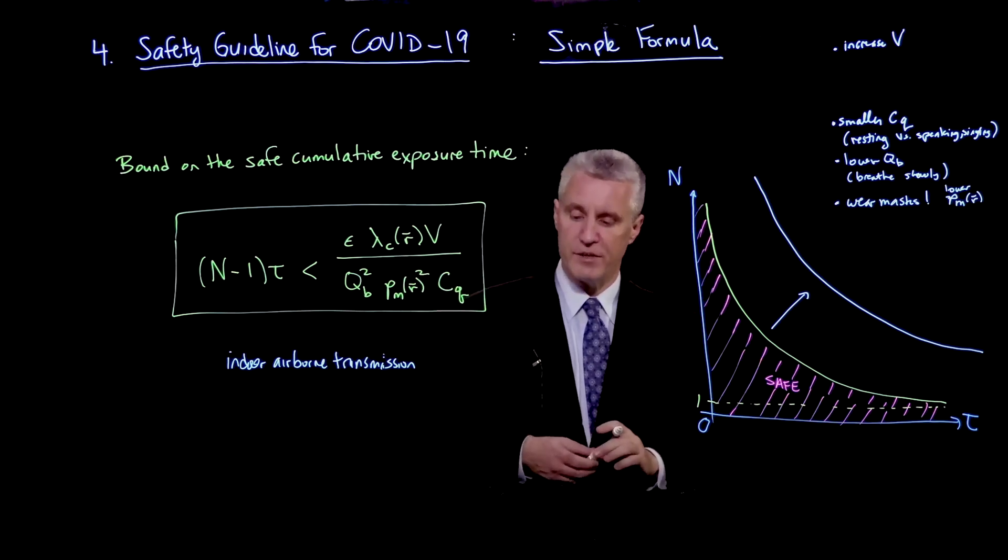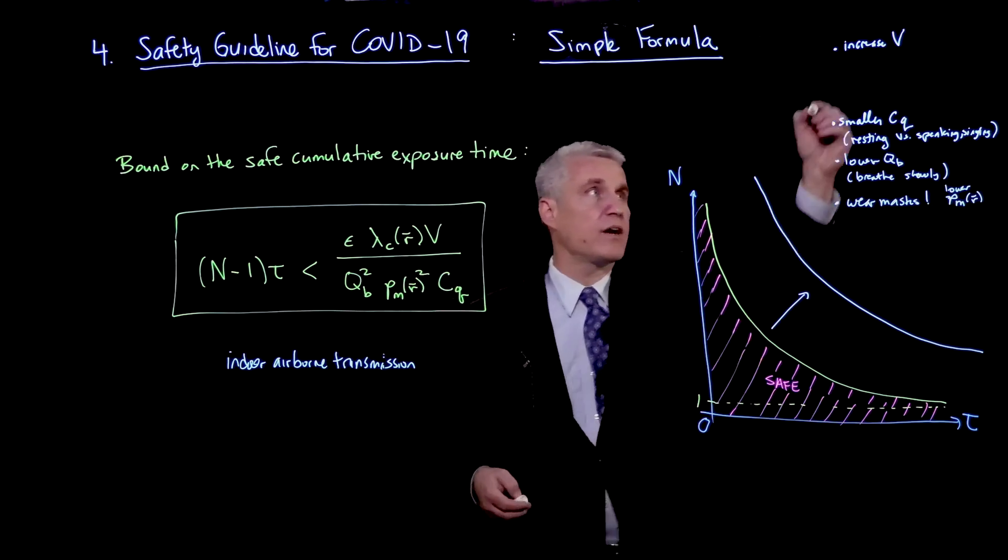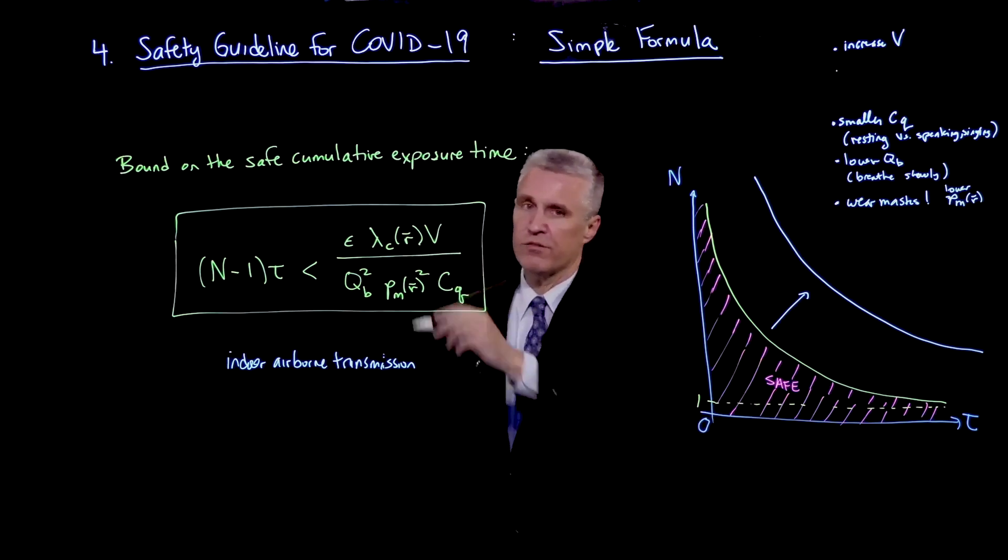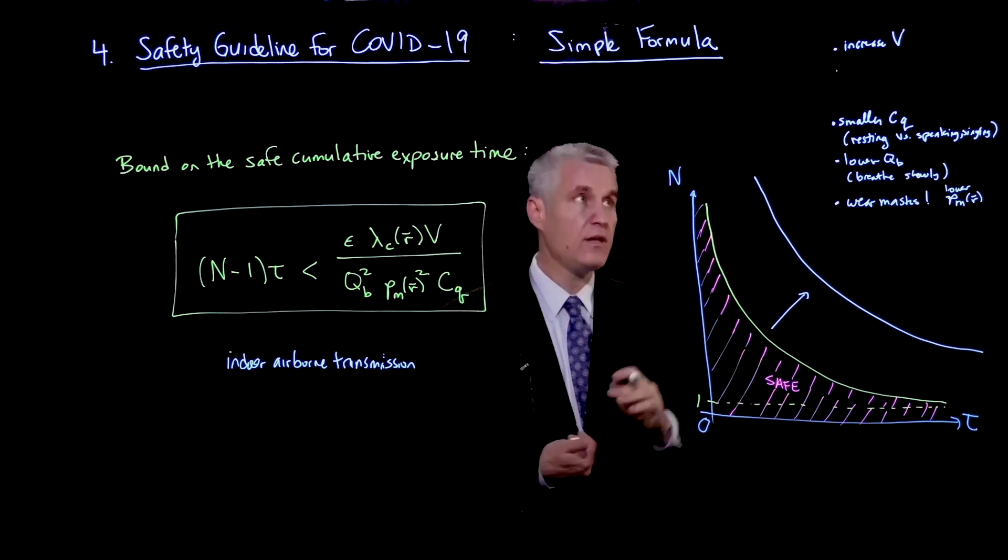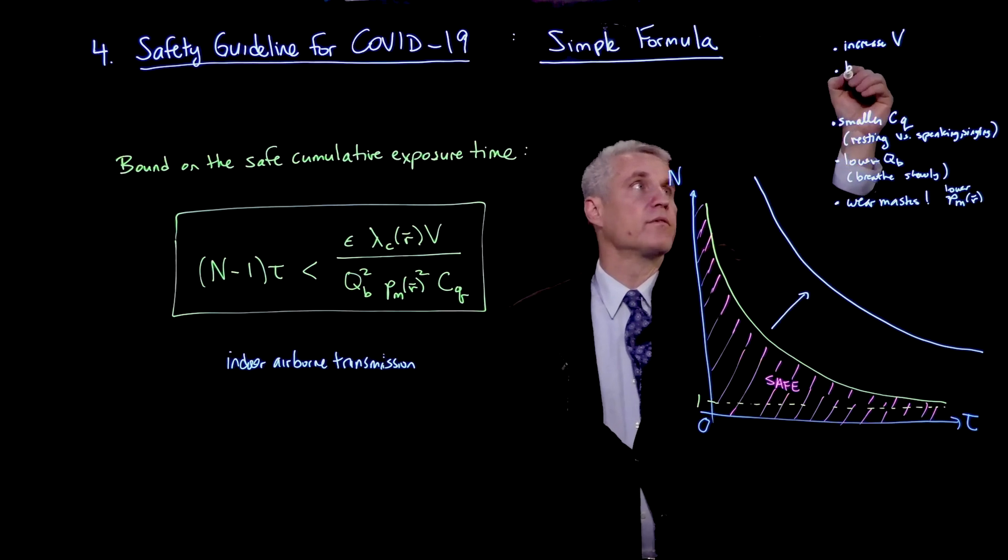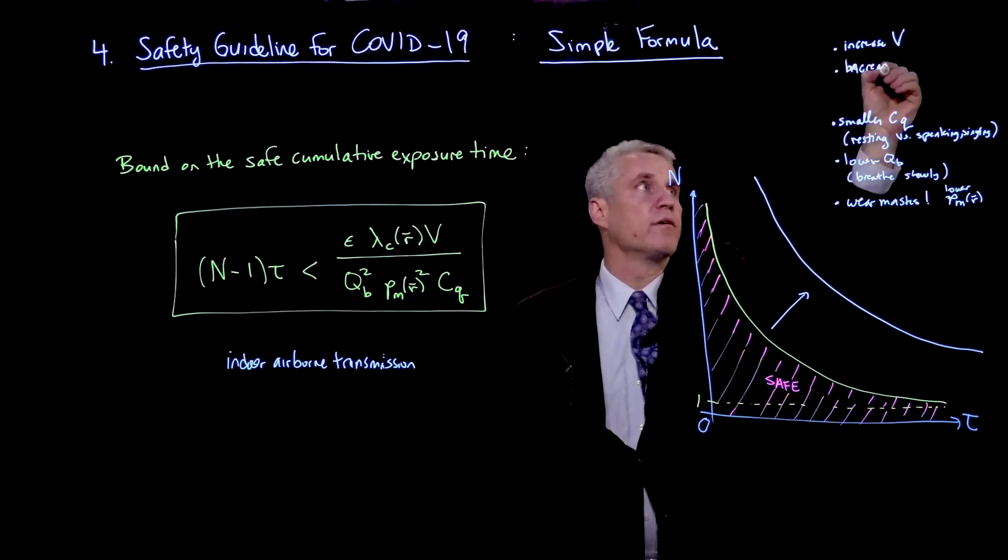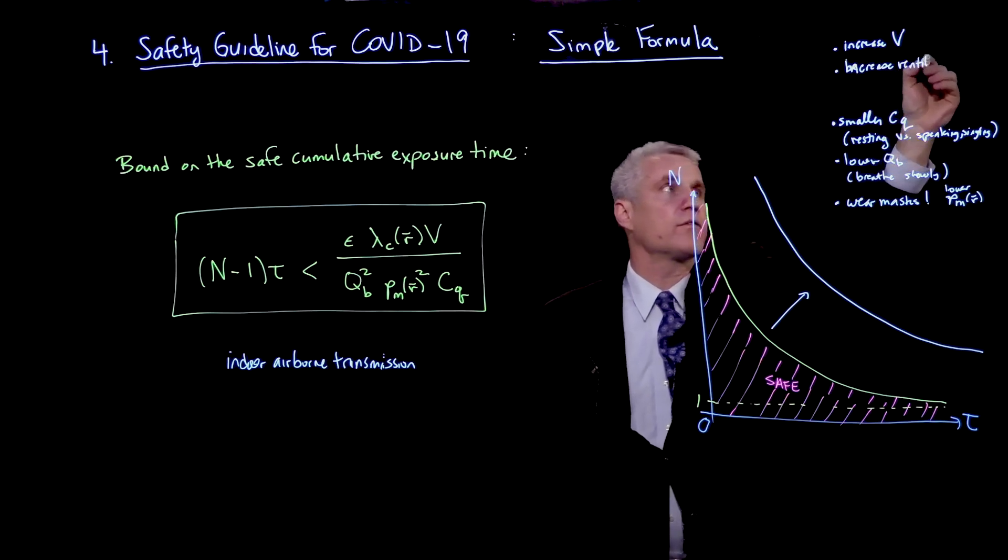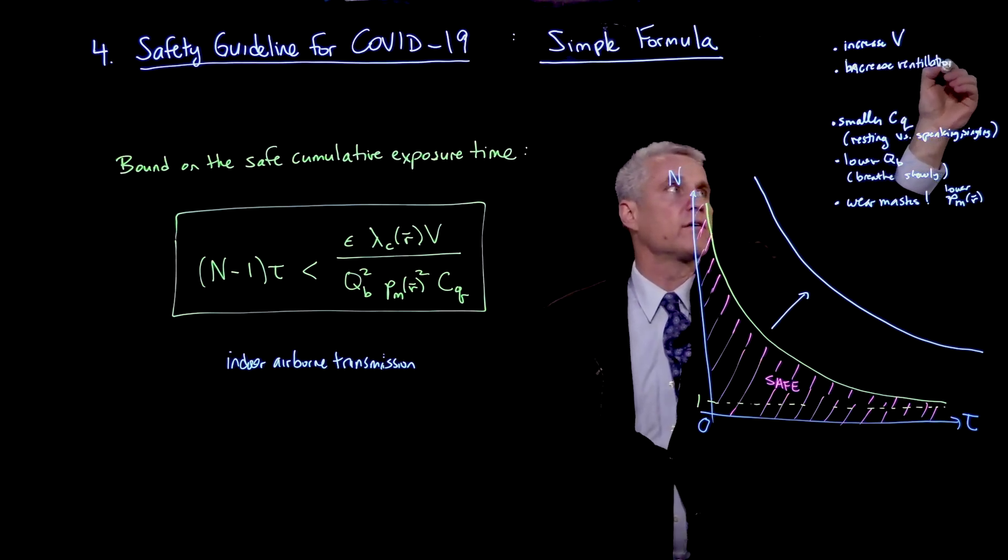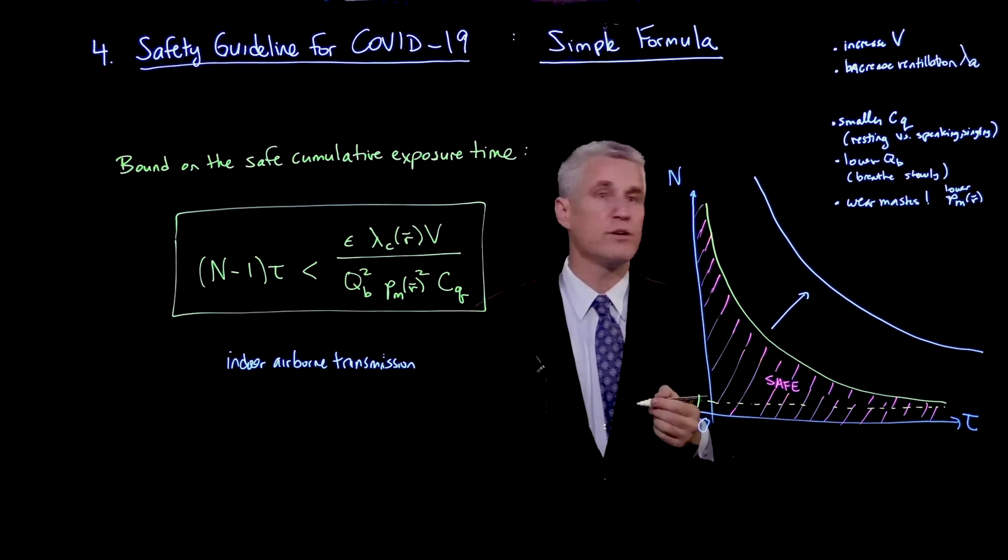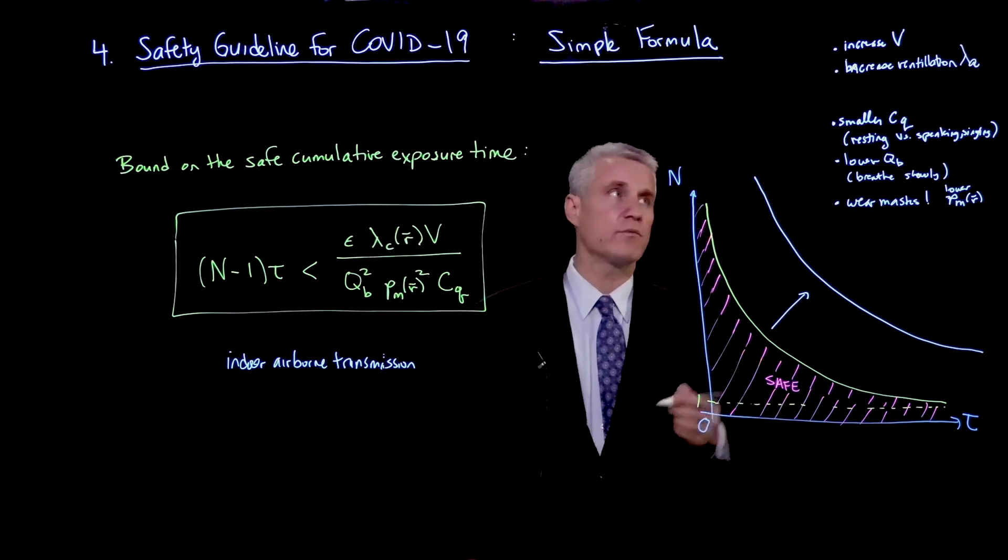Finally, we also have in lambda C, because we had written that out earlier, that also includes several effects, such as better ventilation, so increase ventilation, so the flow rate of outside air. So the air change rate should be increased, and that gives us a larger lambda C.